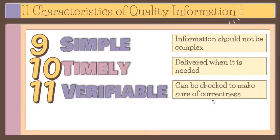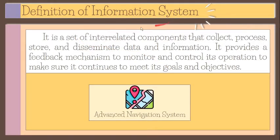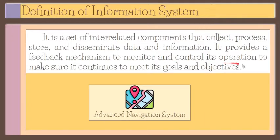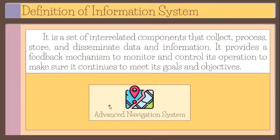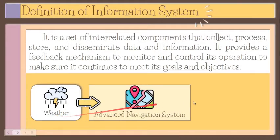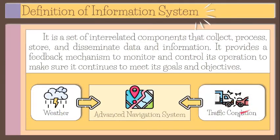Let us define the term information system. It is described as a set of interrelated components that collect, process, store, and disseminate data and information. It provides a feedback mechanism to monitor and control its operation to make sure it continues to meet its goals and objectives. For example, an advanced navigation system gives information that guides you to your destination, and it also incorporates information about the latest weather and traffic conditions to help you avoid congestion and traffic delays.